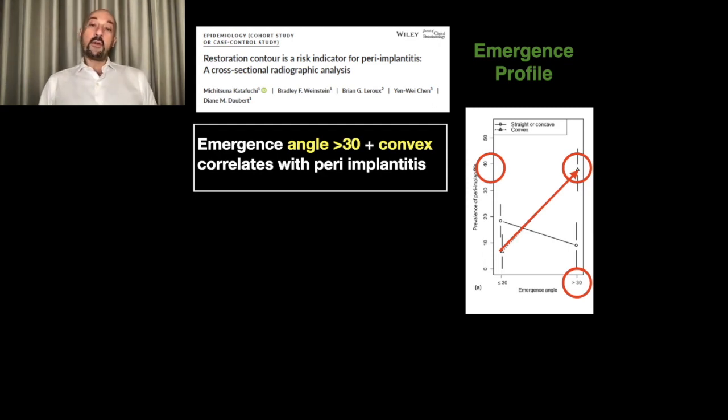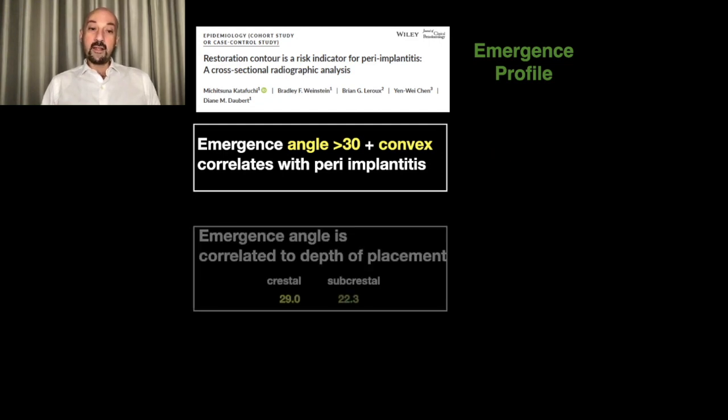Another important finding was the placement depth. For bone level implants, the placement depth correlated significantly with this angle. When the implant was placed at the crestal level, the angle was much wider than when placed subcrestally.